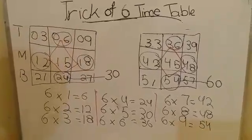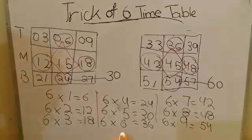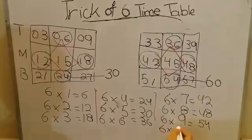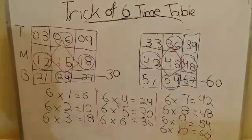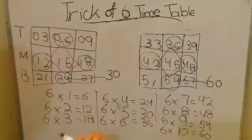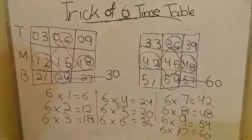And lastly, six times ten is sixty. Now see, we're having our whole six timetable.